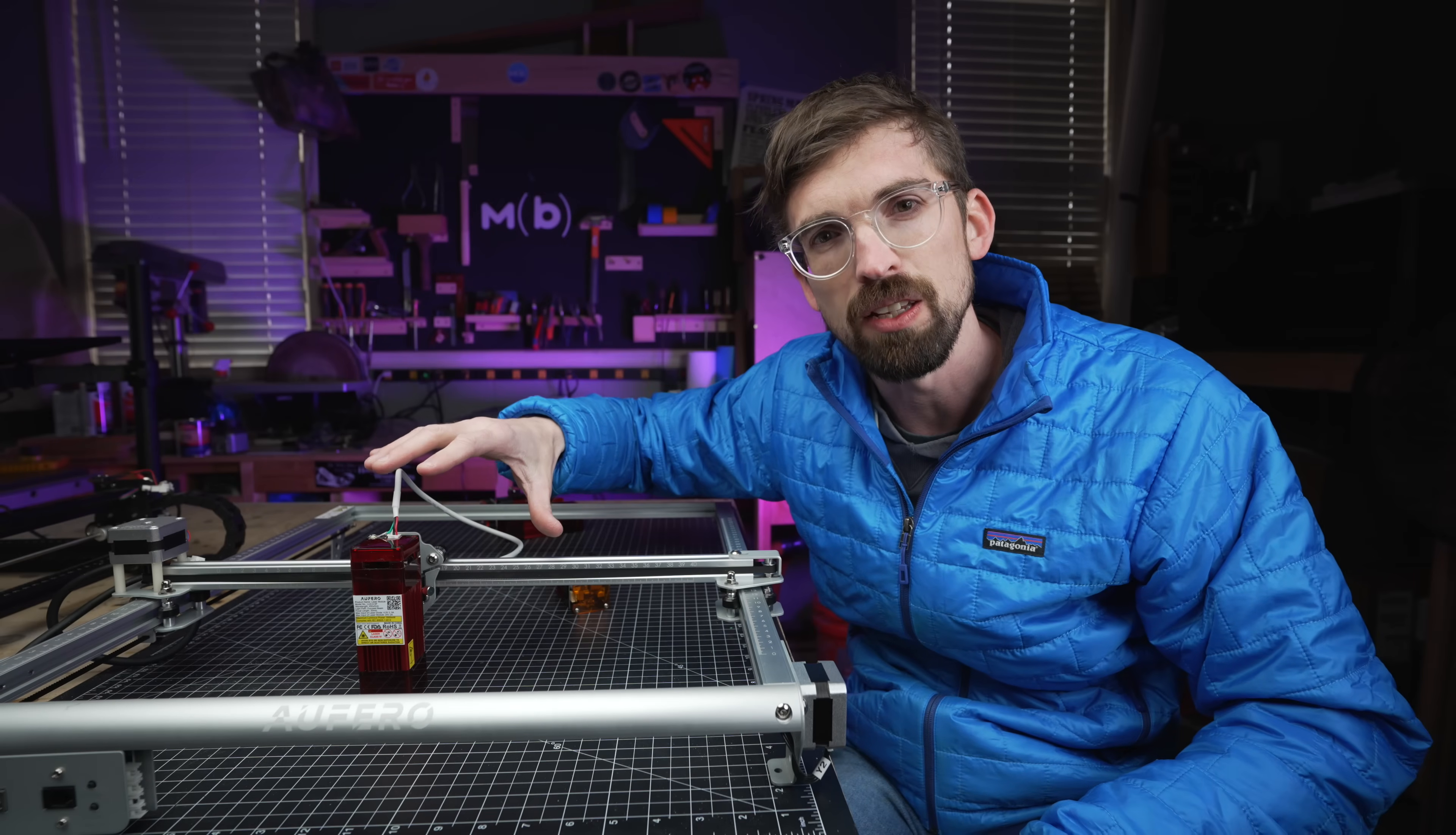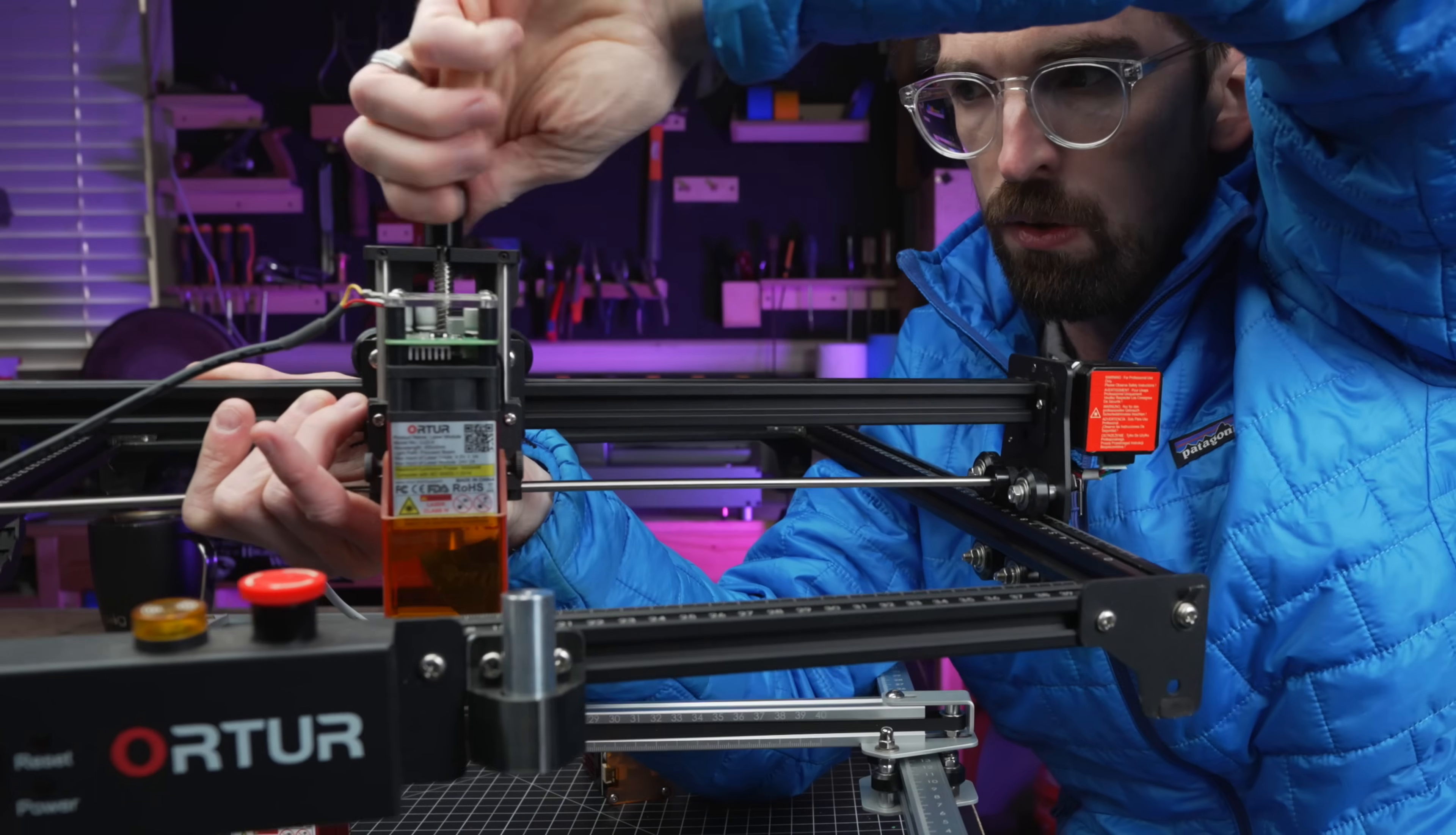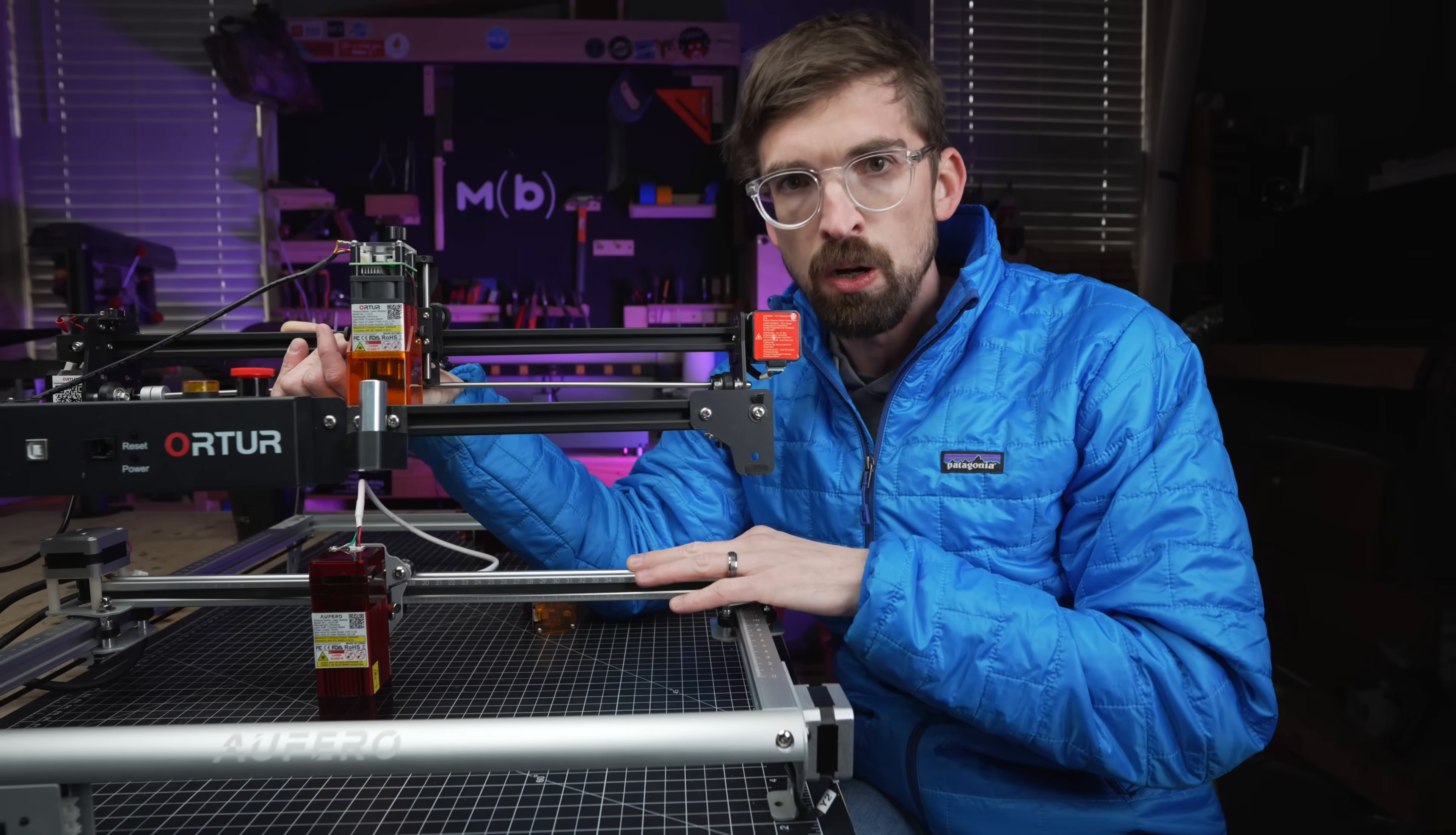Now another add-on that O-Tour has is their Z-axis height adjustment, which just gives you a knob here at the very top, which I actually already have attached to the Pro. And so you just screw this up and you screw this down is an attachment that you can add to this machine as well for an extra cost.